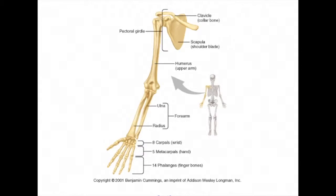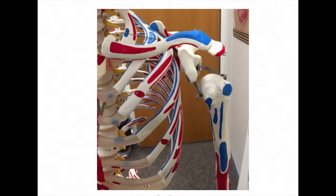Here we see the pectoral girdle, upper arm, forearm, and hand, which is a part of the appendicular skeleton. We see how all bones articulate with one another in this photo. This is a photo taken from our science lab of the pectoral girdle.